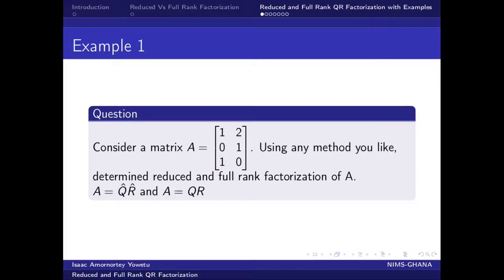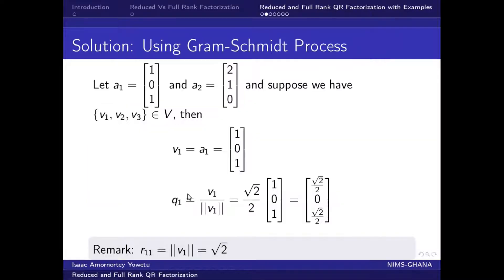So here we have a question: consider a matrix A of 3 by 2; using any method you like, determine the reduced and full rank QR factorization of A. Our matrix A can be decomposed — this is our reduced rank QR factorization and this is our full rank QR factorization. Since the question says any method we like, we choose to follow the Gram-Schmidt process to solve this problem.